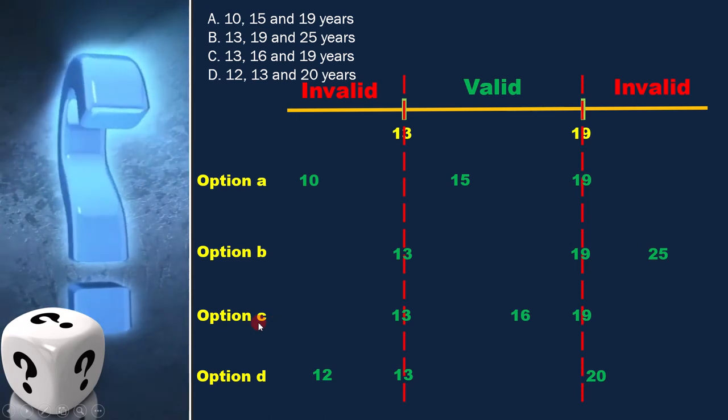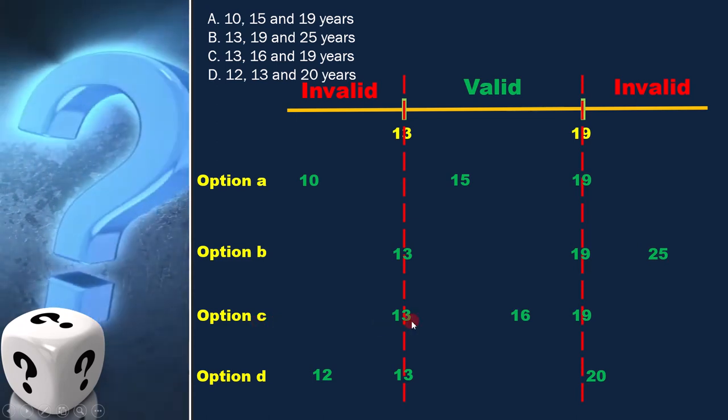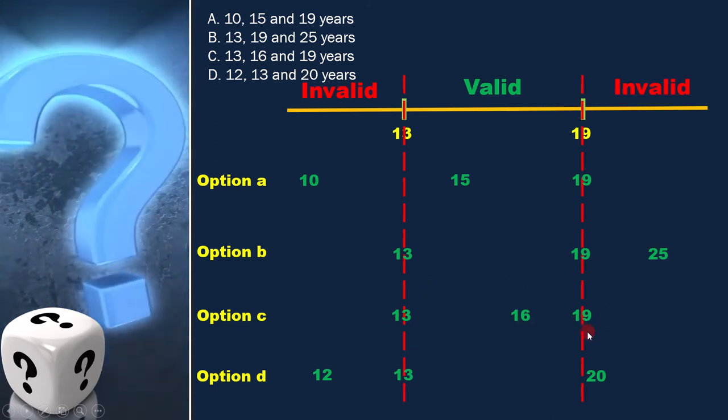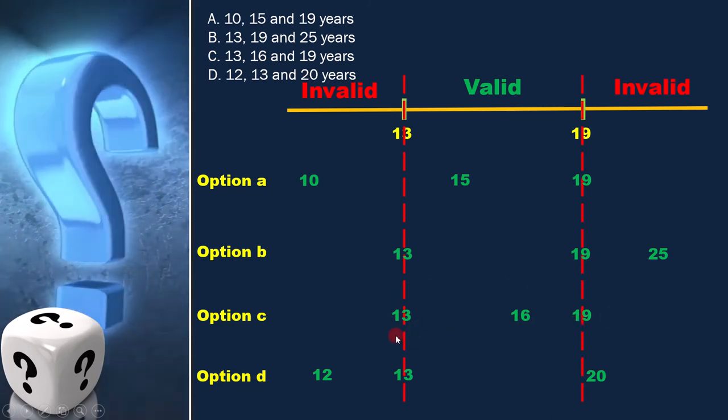In option C, 13, 16, and 19 are all in the valid range.